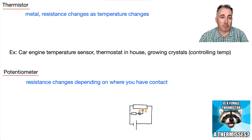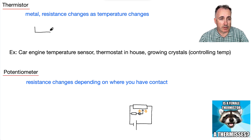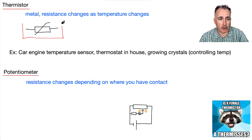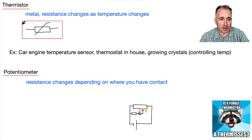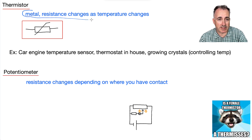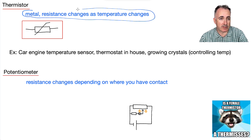Next we have something called a thermistor. The symbol goes like this. The key word is 'thermal' — it sounds like thermal — because we have a material where the resistance changes as the temperature changes.